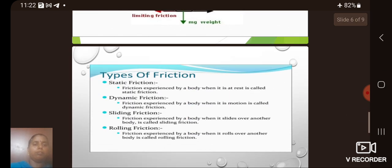Then types of friction. Static friction: friction experienced by a body when it is at rest is called static friction. Dynamic friction: friction experienced by a body when it is in motion is called dynamic friction. Sliding friction: friction experienced by a body when it slides over another body is called sliding friction. Rolling friction: friction experienced by a body when it rolls over another body is called rolling friction.